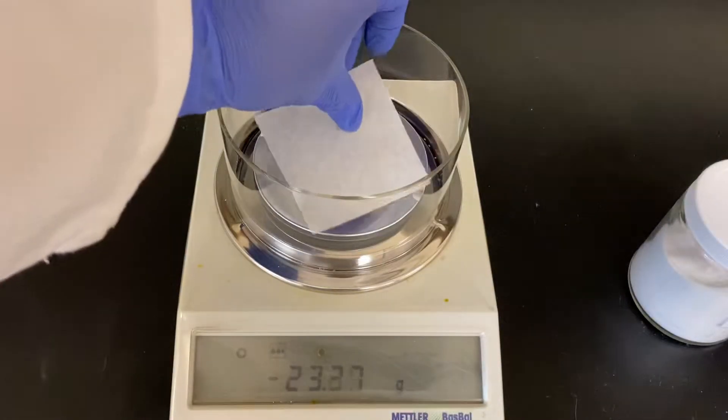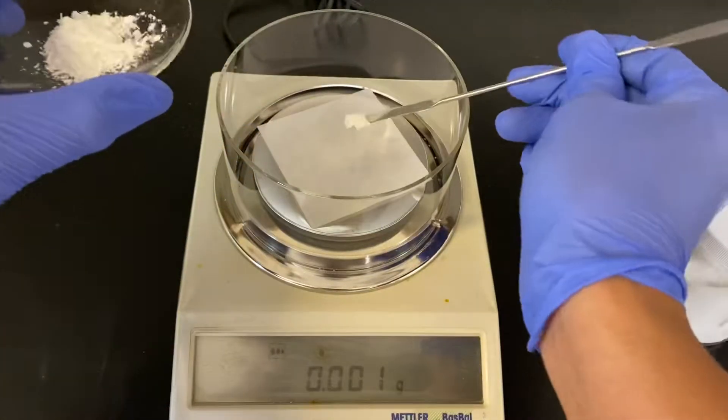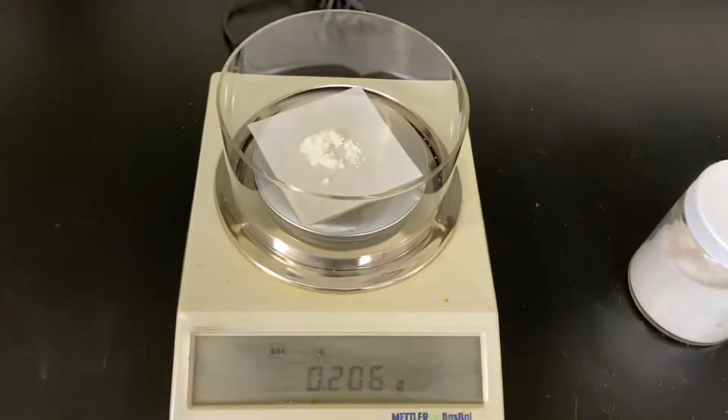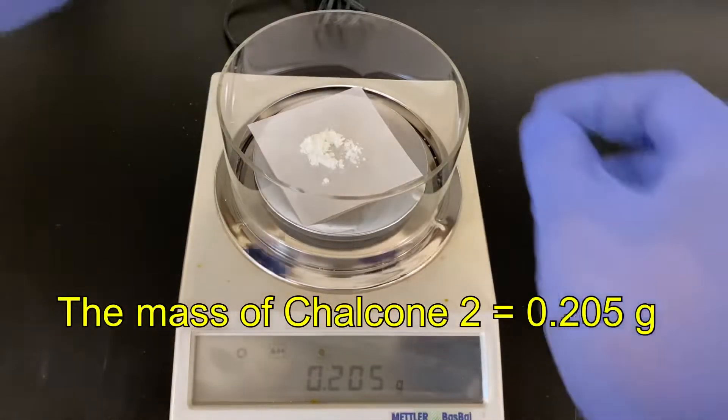In this experiment, we will reduce the substituted chalcone, which is synthesized in the first part of the experiment, using sodium borohydride. The amount of the substituted chalcone used in this experiment was 0.205 grams.